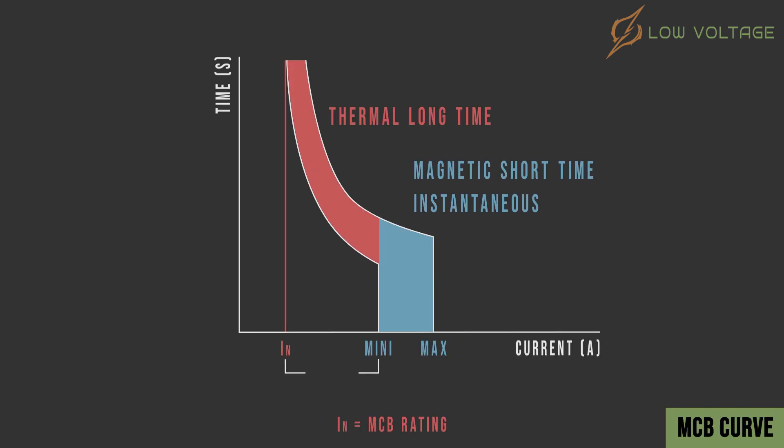Now we can say if the current is between IN and minimum magnetic settings, the MCB will trip thermally in delayed time. And if the current is between the minimum and maximum magnetic settings, the MCB will trip magnetically in short instantaneous time.